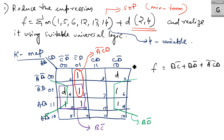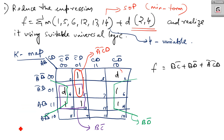What is remaining is one cell, which we try to make into a pair. That pair gives ĀC̄D, where Ā is common and we get C̄D. Therefore the minimized expression is F = BC̄ + BD̄ + ĀC̄D. Note that the don't care at position 4 was not required in forming the expression, so we simply ignored it.